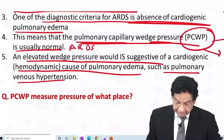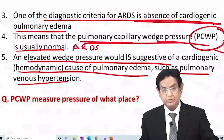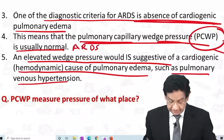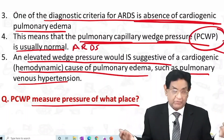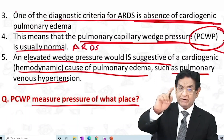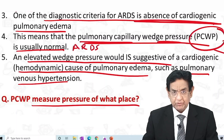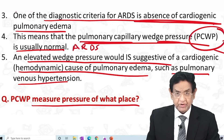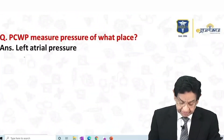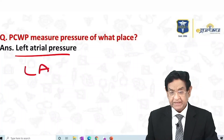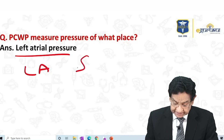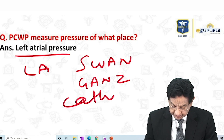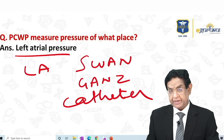We have been talking about pulmonary capillary wedge pressure — normal in ARDS, increased in cardiac pulmonary edema. But what does it measure? It is the measurement of left atrial pressure. And we use the Swan-Ganz catheter to measure pulmonary capillary wedge pressure.